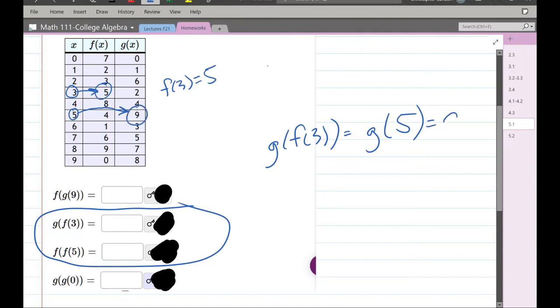So g of f of 3 is 9. Let's go ahead and check our answer.